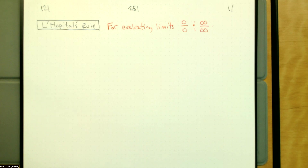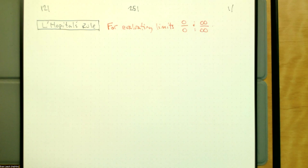Infinity is not a number. So when we say something like what's infinity divided by infinity, it depends on what those infinities are doing — what's happening as the numerator gets large, what's happening as the denominator gets large, what's happening to that ratio. We're not really plugging stuff in, even though we like to say 'plugging in infinity.' We've got to think there's a lot more going on as those values get larger and larger.